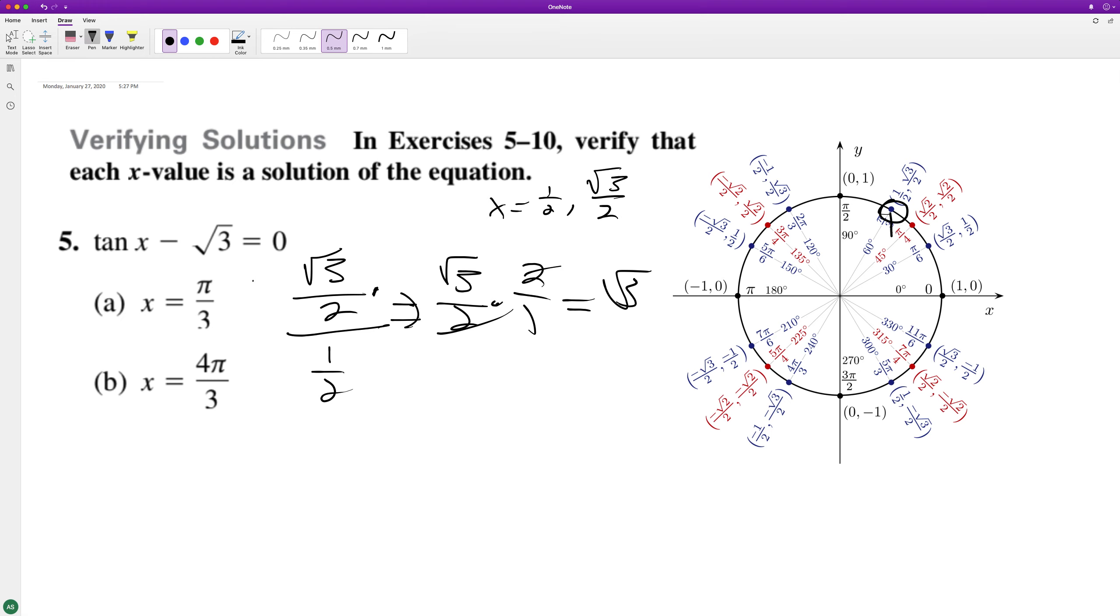So then let's try 4 pi over 3. 4 pi over 3 is down here. So what we get there is y over x, we get negative root 3 over 2 over negative 1 half.